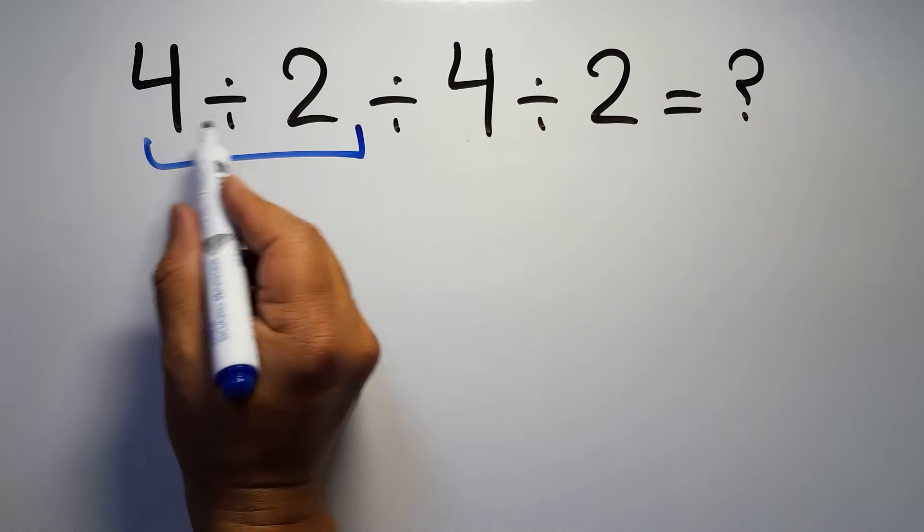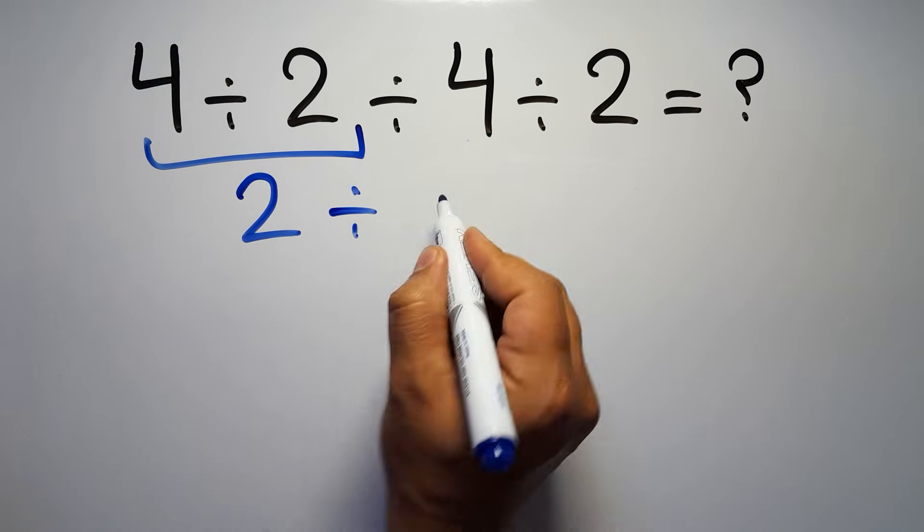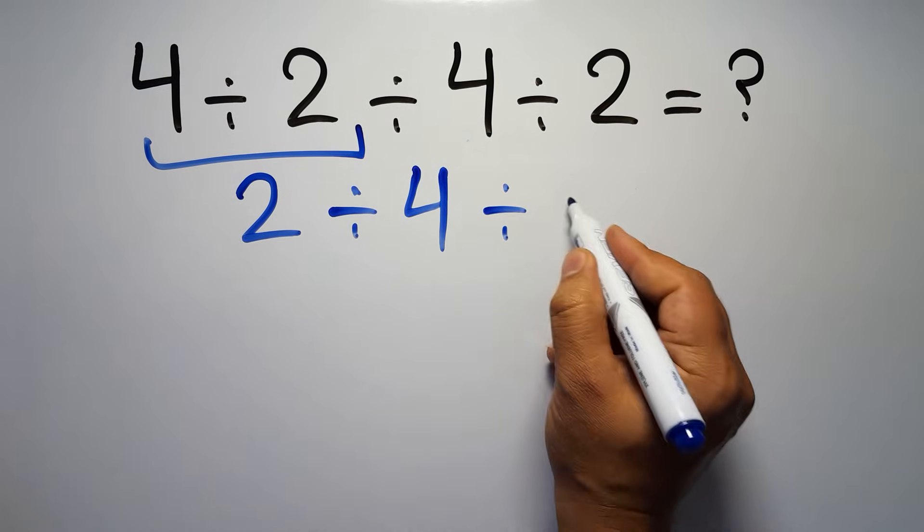So first this division, 4 divided by 2 is just 2, so 2 divided by 4, and again divided by 2.